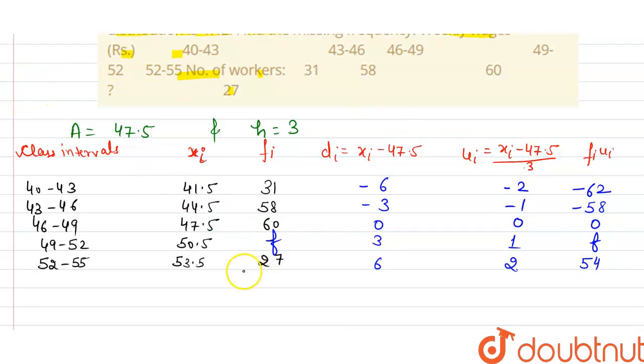Now we calculate the sum of fi's: that is equal to 176 plus f, and it is denoted by n. Now we calculate the summation fi*ui: that is equal to f minus 66.